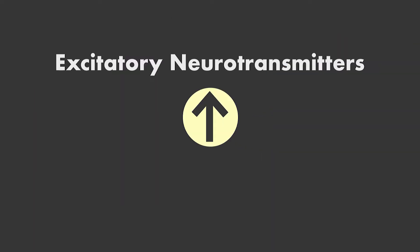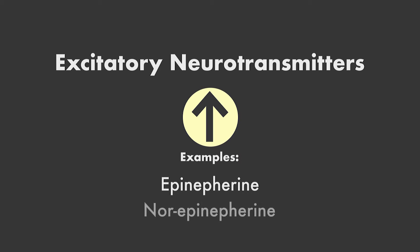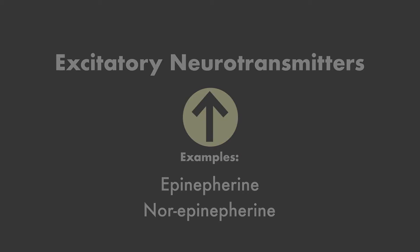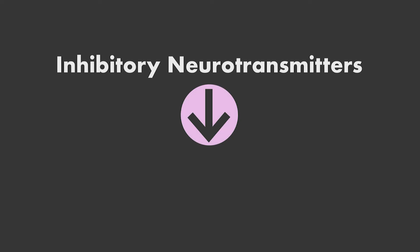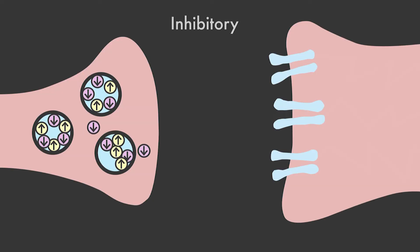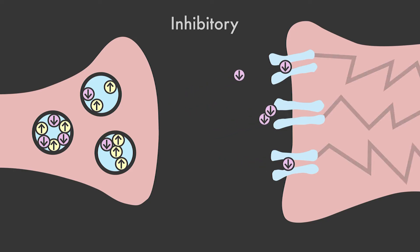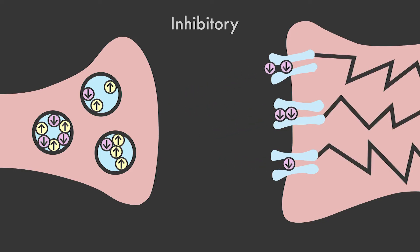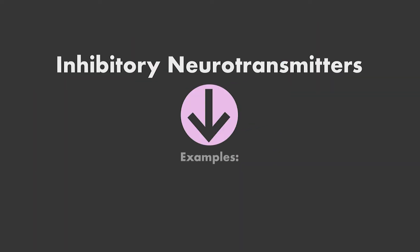Some of the major excitatory neurotransmitters include epinephrine and norepinephrine. Inhibitory neurotransmitters: these types of cells have an inhibitory effect on the neuron. They decrease the likelihood that the neuron will fire an action potential. Some of the major inhibitory neurotransmitters include serotonin and GABA.